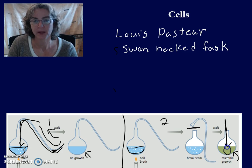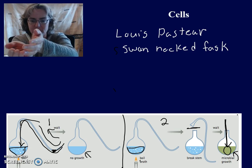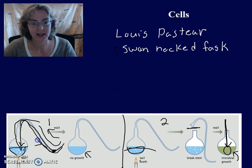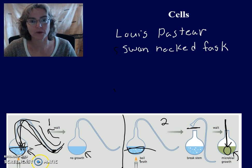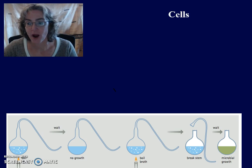He showed that it was the dust providing the start to life in the broth, not spontaneous generation. To back this up further, he tipped flask 1 so the broth ran down the neck and touched the dust, then went back into the flask — and after that there was microbial growth. That's a very elegant experiment to show that new cells arise only from pre-existing cells.